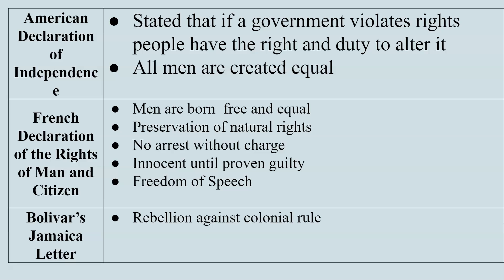The big outcomes of these Enlightenment ideas are the wars of independence and the French Revolution in the late 18th and early 19th centuries. The American Revolution adopted Locke's ideas of natural rights — that if a government violates the rights of people, they have the right and duty to alter it. Jefferson argued the British government was violating Americans' rights, so it was their duty to overthrow it and emplace a government that would respect those rights.